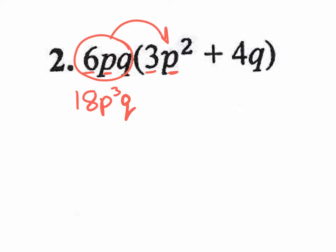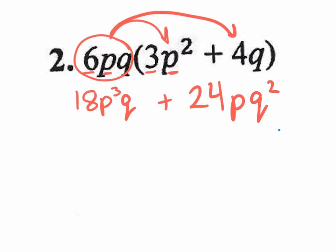Okay, now how about 6pq times 4q? What's 6pq times 4q? 24, positive 24. The p, there is no p, so you just put the p right there, 24p. And how about q times q? Q squared. And that's it. That's your answer. So you can see these are pretty easy.